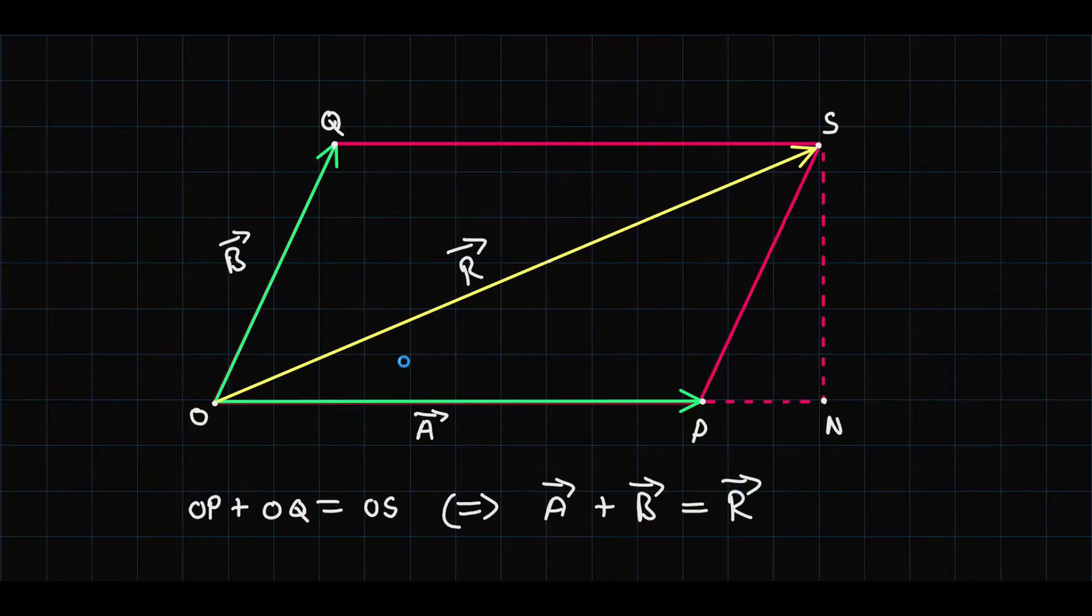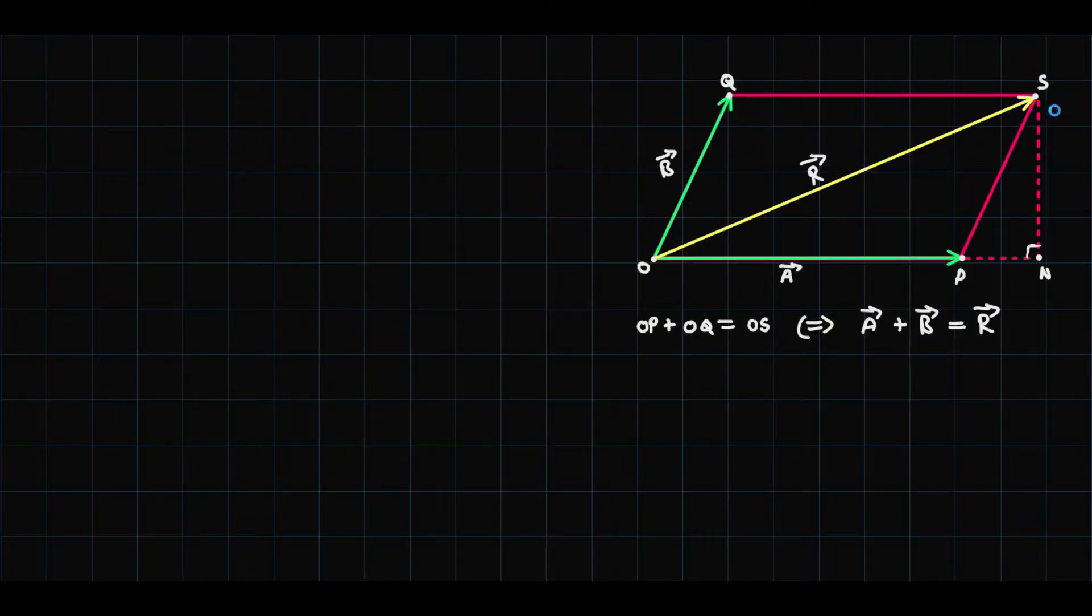And now we move on to the derivation of the expression for finding the magnitude of this resultant here. Now see that I have dropped a perpendicular from S to N so that we obtain this right angle triangle over here O, N, S.